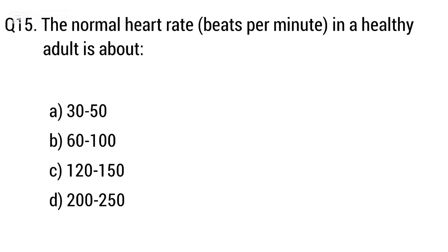Question 15. The normal heart rate in beats per minute in a healthy adult is about? The right answer is option B: 60–100 BPM.